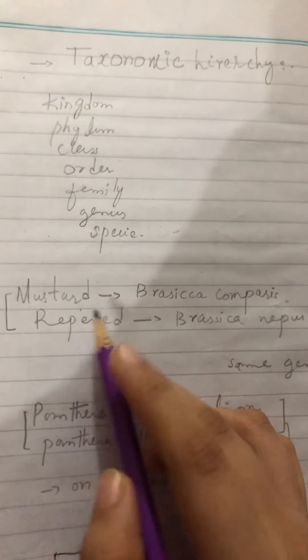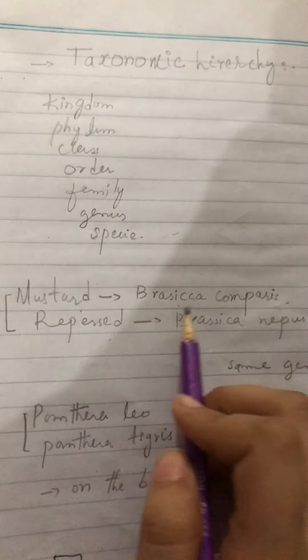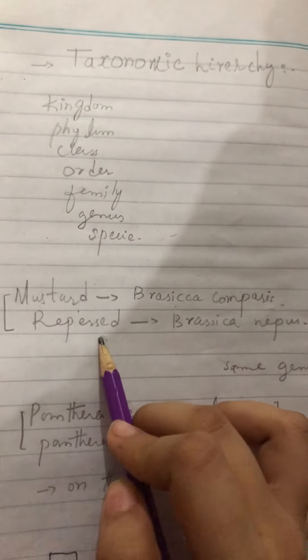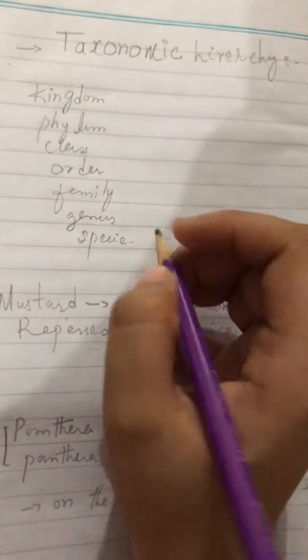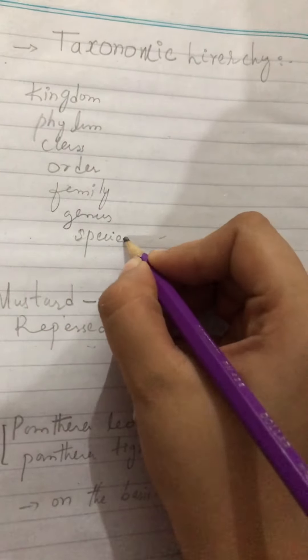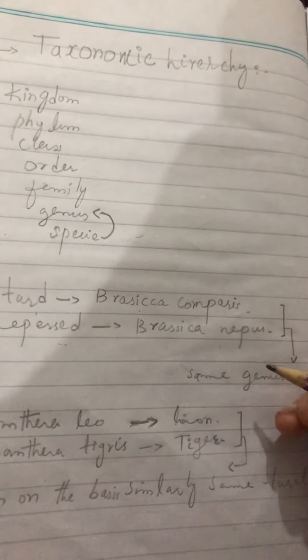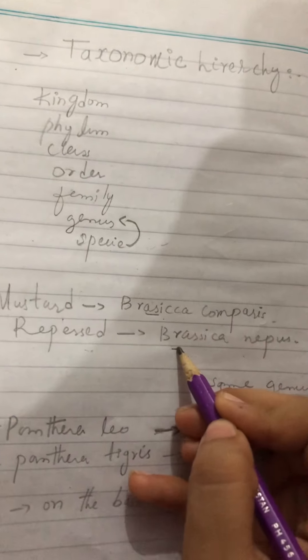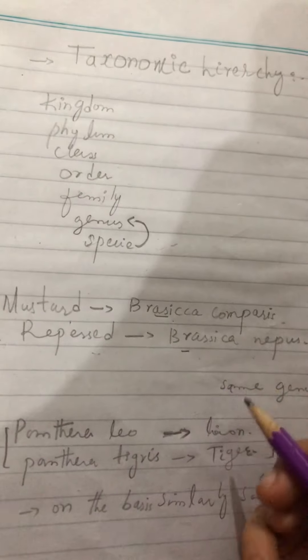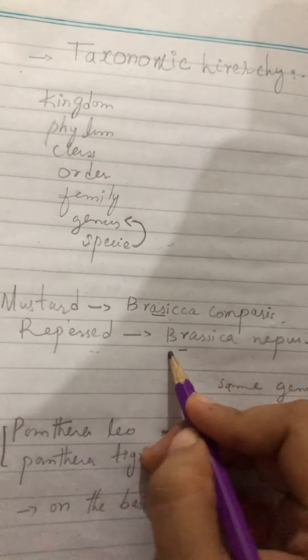As an example, take mustard. The scientific name of mustard is Brassica campestris, and rapeseed's scientific name is Brassica napus. If we want to classify these, both share the same genus — Brassica — so they are placed in the same genus.